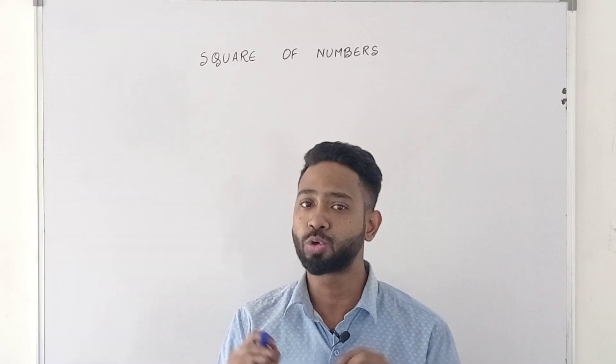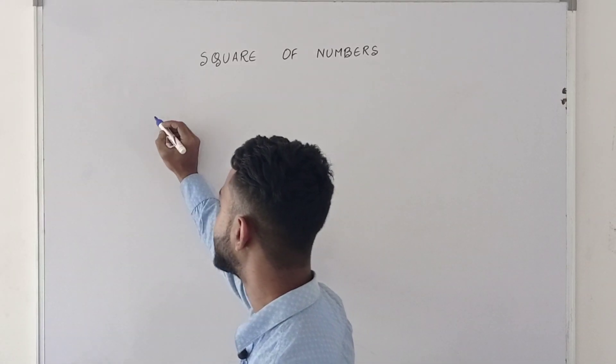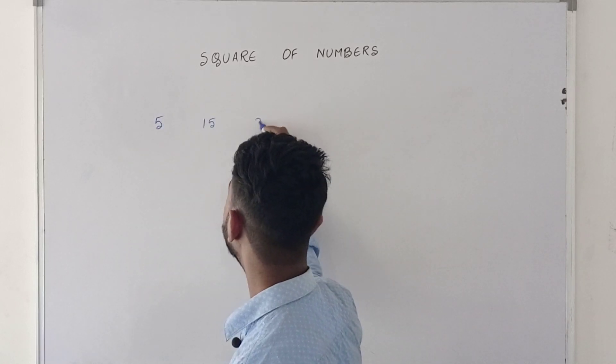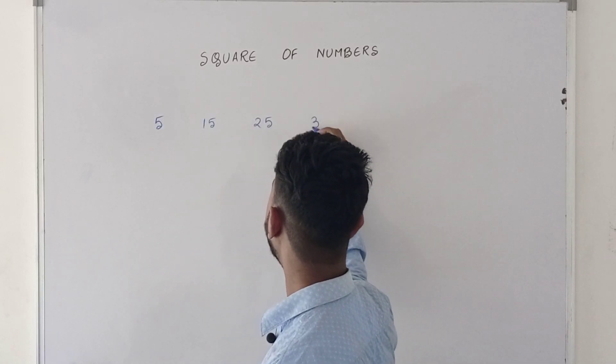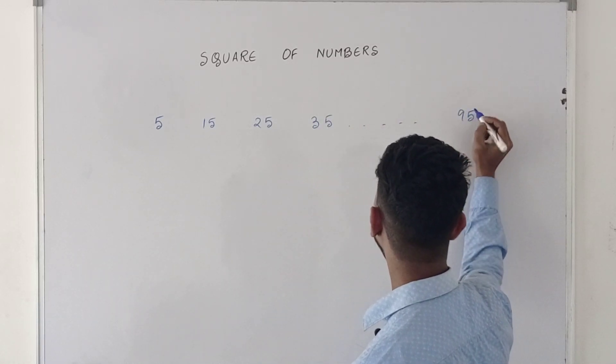So let us discuss how to get the squares of the multiples of 5. So the multiples of 5 will be 5, then 15, then 25, then 35, and so on, until 95. In the bottom, we have two-digit numbers to discuss.